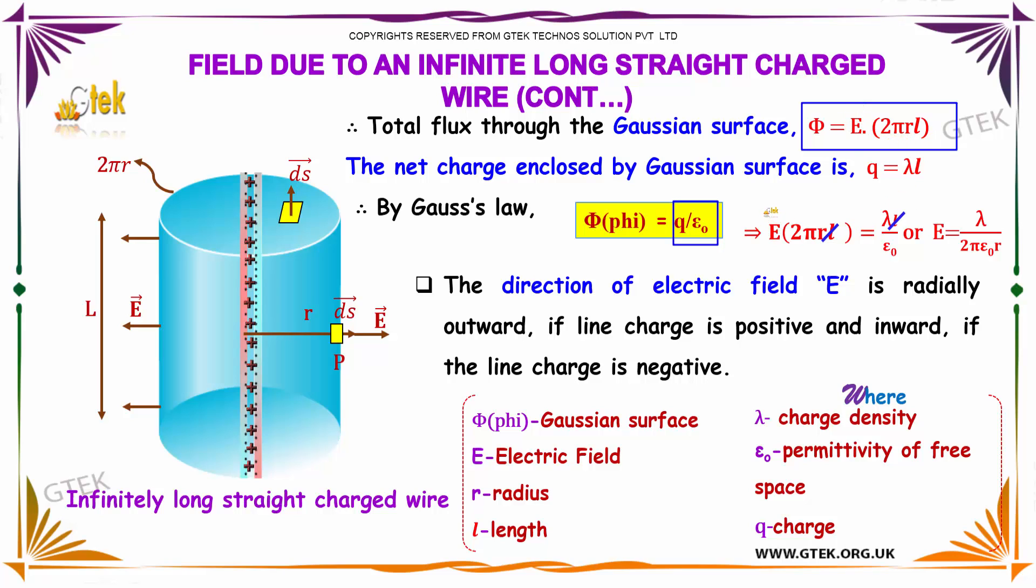Substituting the value for Φ, which is E × 2πrL, and we know the value of q is λL, we get E × 2πrL = λL/ε₀. On calculating, we get E = λ/(2πε₀r).